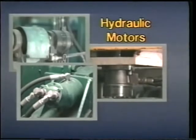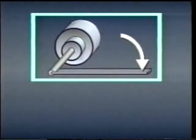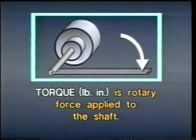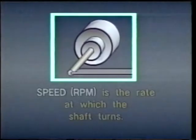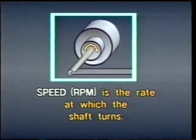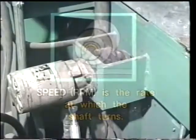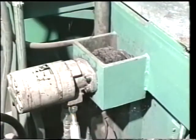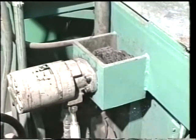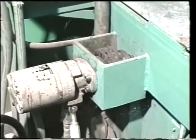When operating any motor, two main factors must be considered: torque and speed. Torque is the rotary force applied to the shaft, usually expressed in pound inches. Speed is the rate at which the shaft turns, usually expressed in revolutions per minute. Let's look at a vane motor to see how pressure and flow in a hydraulic system affect the motor's torque and speed.